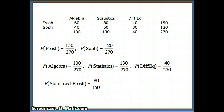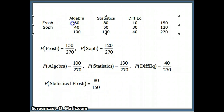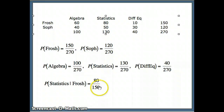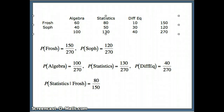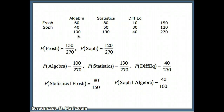Let's look at some conditional probabilities. The probability of a student studying statistics given that the student is a freshman: we focus on the 150 freshmen, and of them, 80 are in statistics, giving 80 out of 150. Another question: the probability of someone being a sophomore given they're in algebra. We have 100 students in algebra total, and 40 of them are sophomores, so the probability is 40 out of 100.